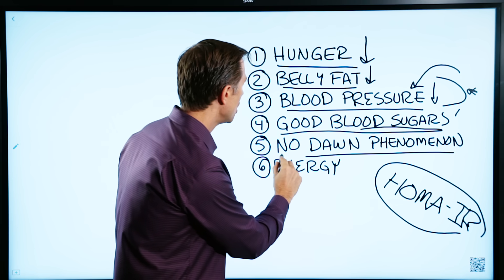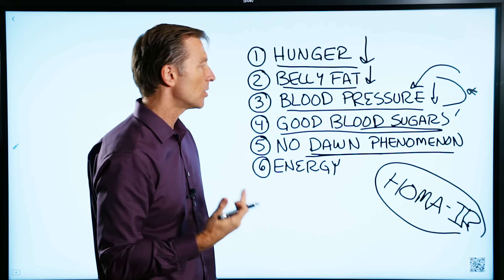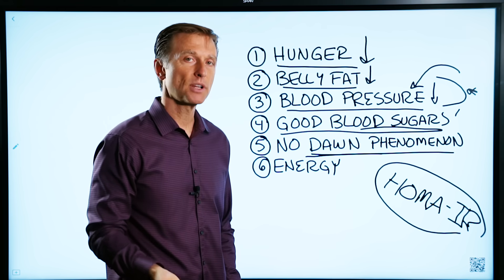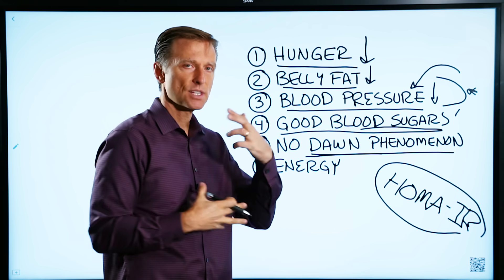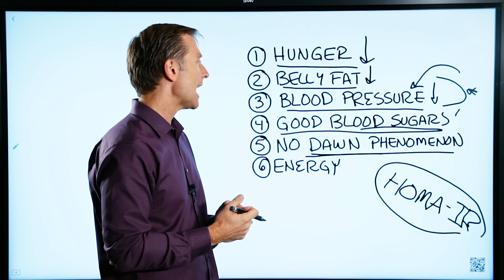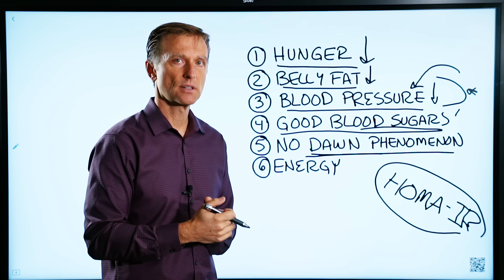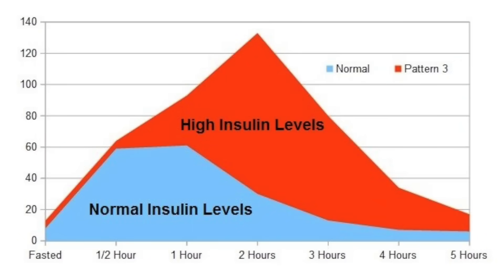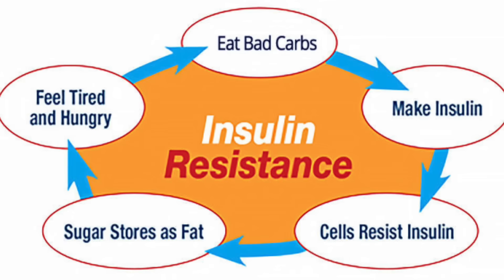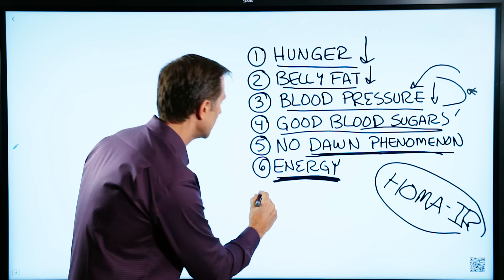Number five: no dawn phenomenon. The dawn phenomenon is when you wake up in the morning, you didn't eat anything, and your blood sugar is high. That just means you're in the transition phase of adapting to ketosis and you still have insulin resistance. So if you have this and then it goes away — which it will over time — that means your insulin resistance is much, much better. And number six: you have a lot more energy. That's a real good indicator that it's working.